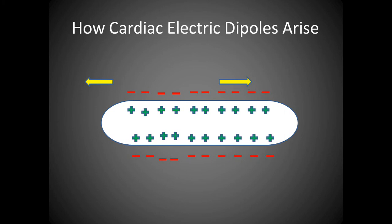At a certain moment, half of the cell will be depolarized, being negatively charged on the outer surface of the membrane, and the other half of the cell, which is not yet depolarized, the membrane's outer surface will be positively charged. The opposite charges of the cell surface will form an electric dipole. These cardiac dipoles can be represented by electrical vectors.